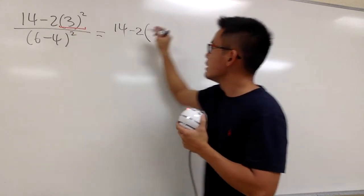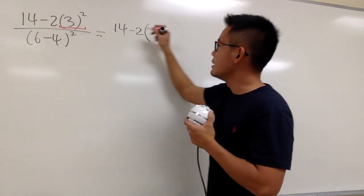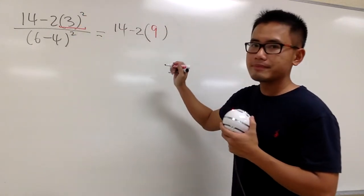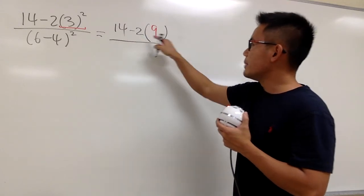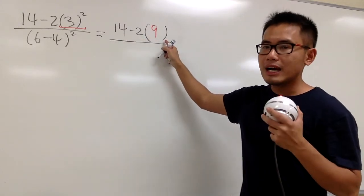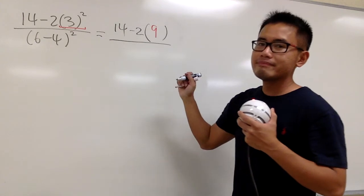So, I will put parentheses, and inside, 3 squared is the 9. Let's put it down here. And the reason I maintain the parentheses is because we still have to multiply this and that, but we'll do it later.